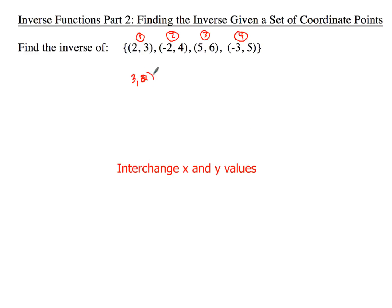For our second pair, we'll have 4 and negative 2. For our third pair, we'll get 6 and 5. And then for our last pair, we will have 5 and negative 3. Now make sure our inverse notation is good. Be sure you put your braces there or brackets, and make sure you put a comma in between each set of points. That's it. That's all you have to do.